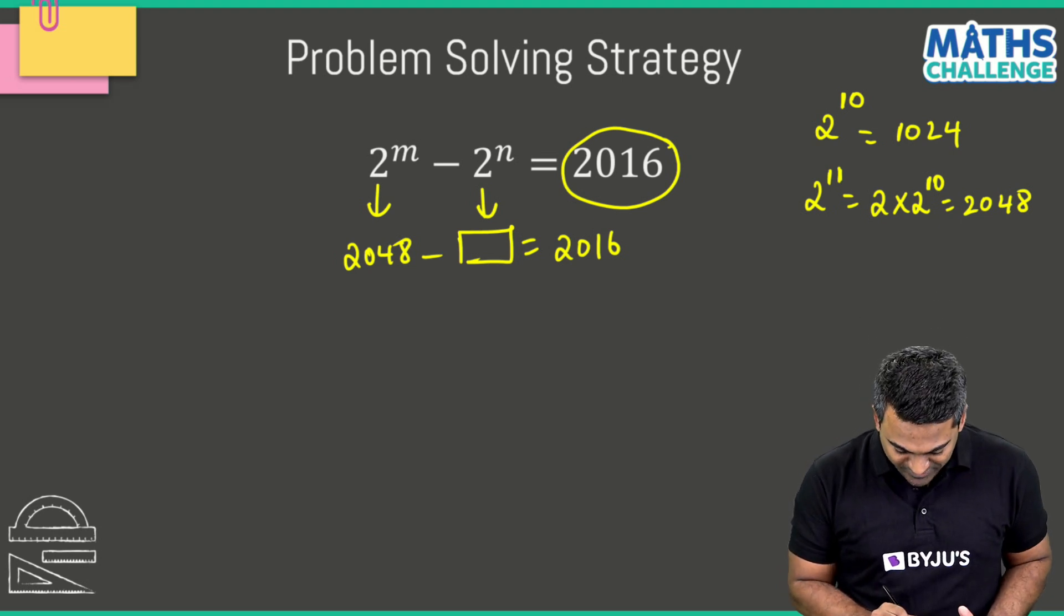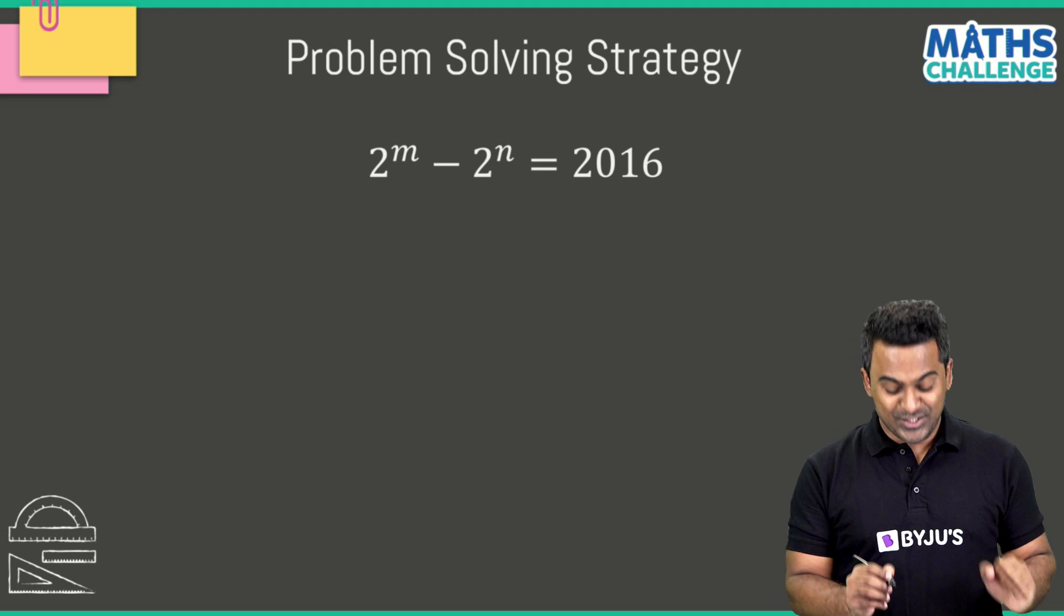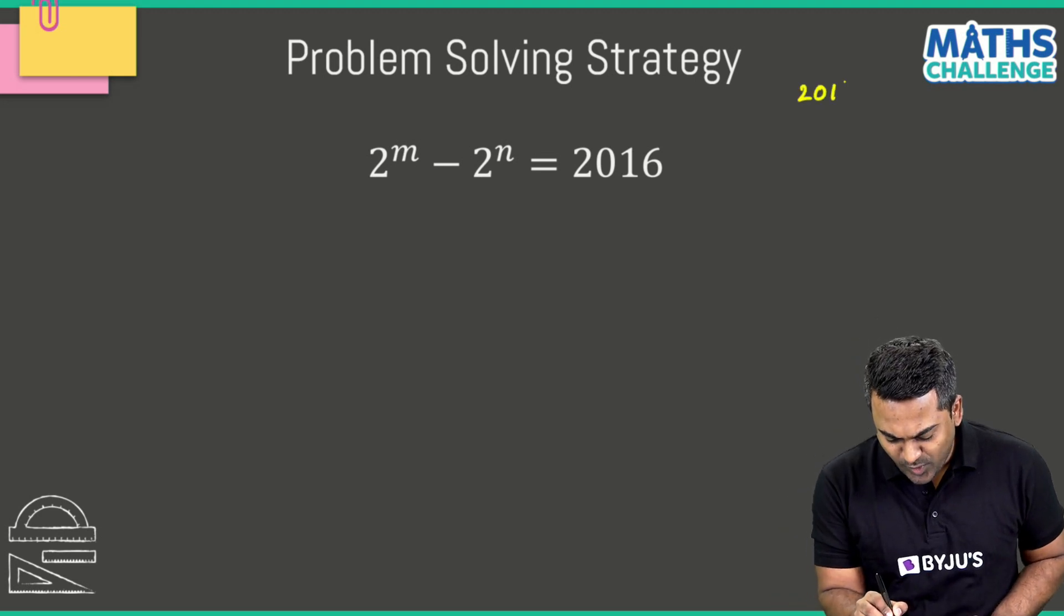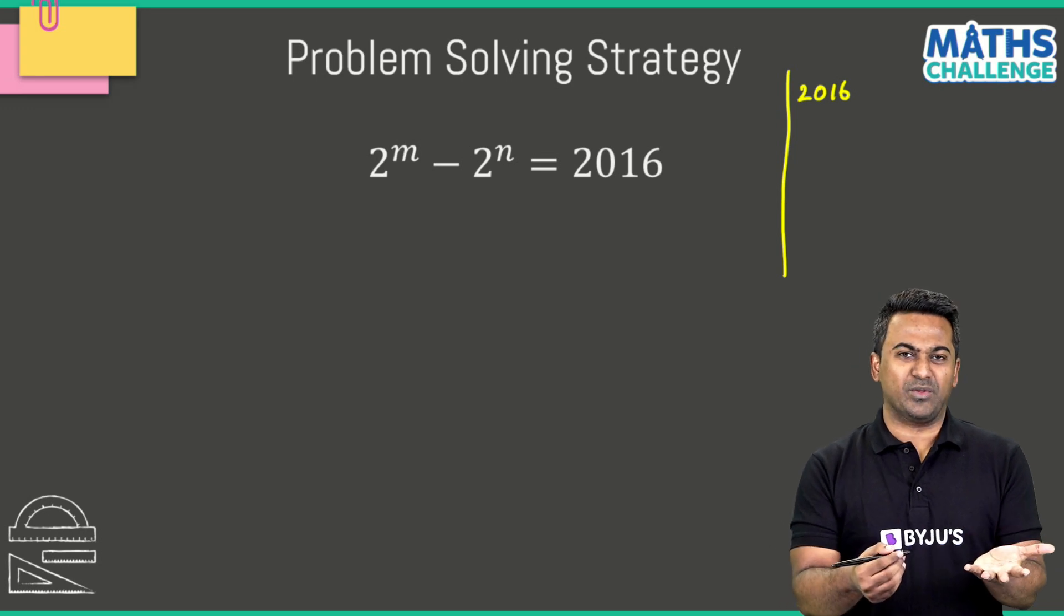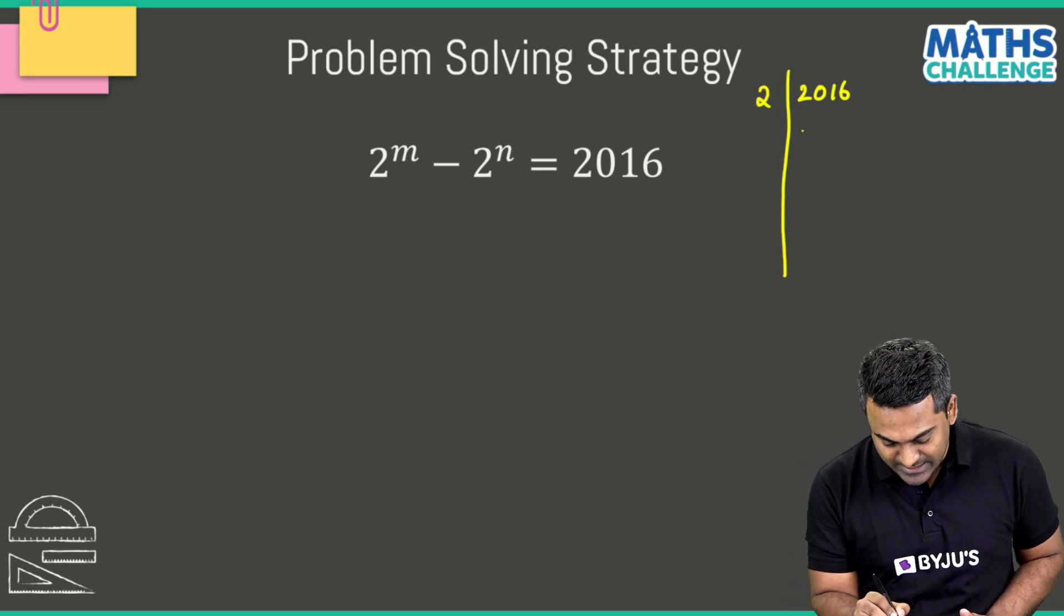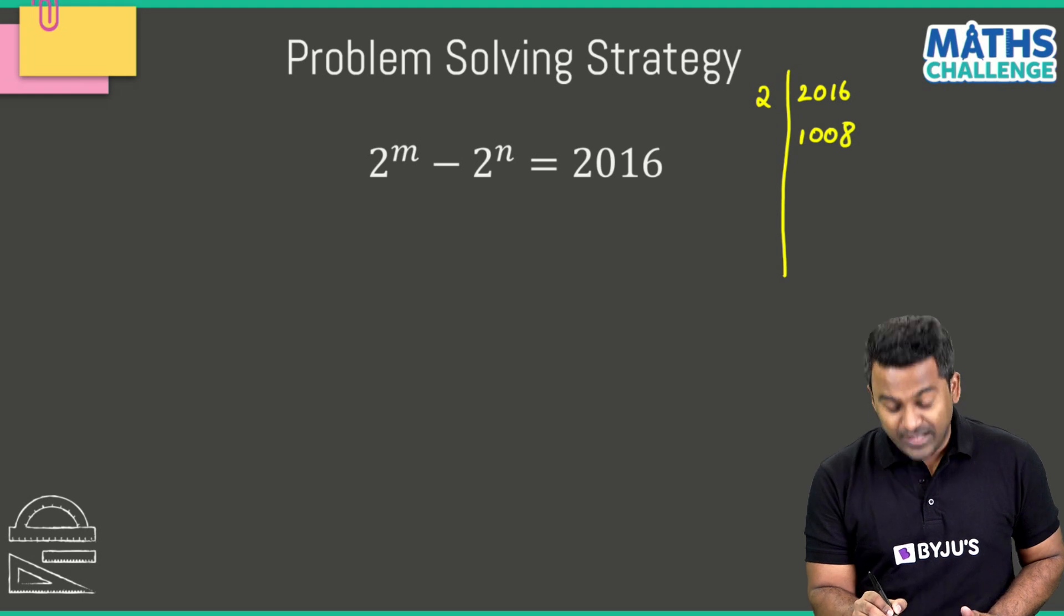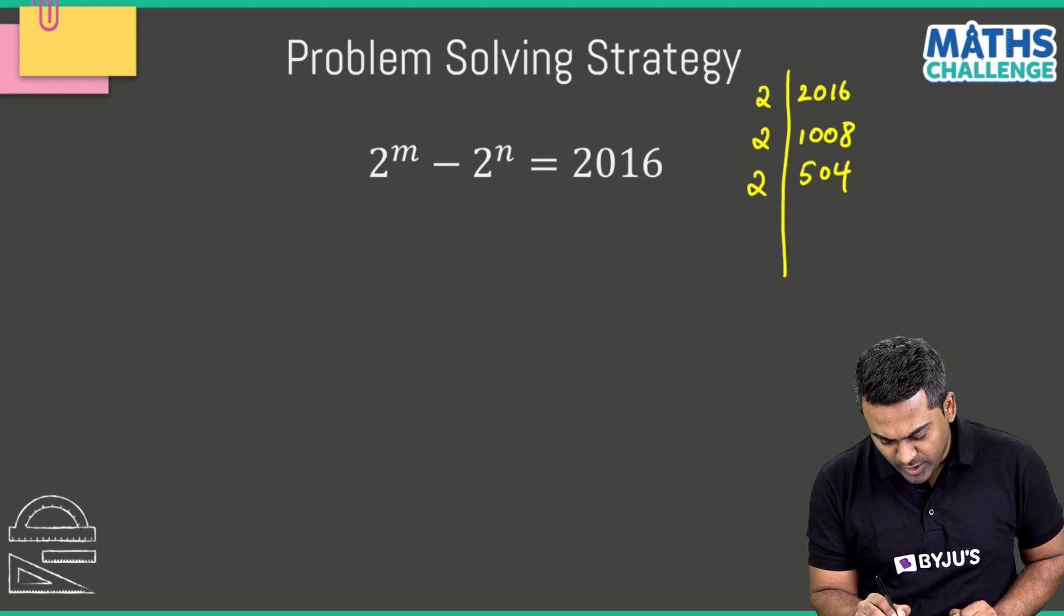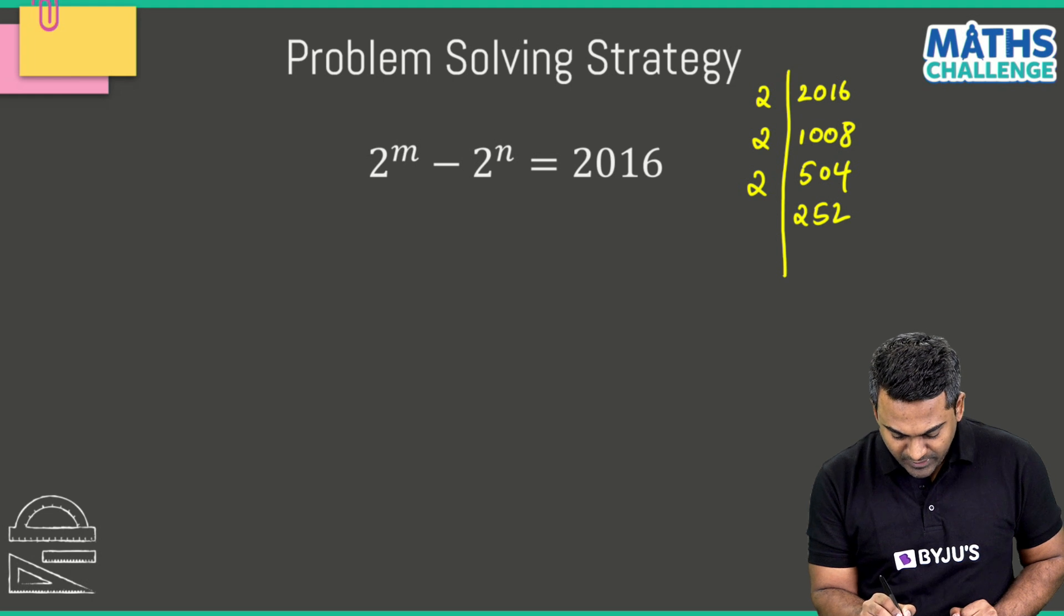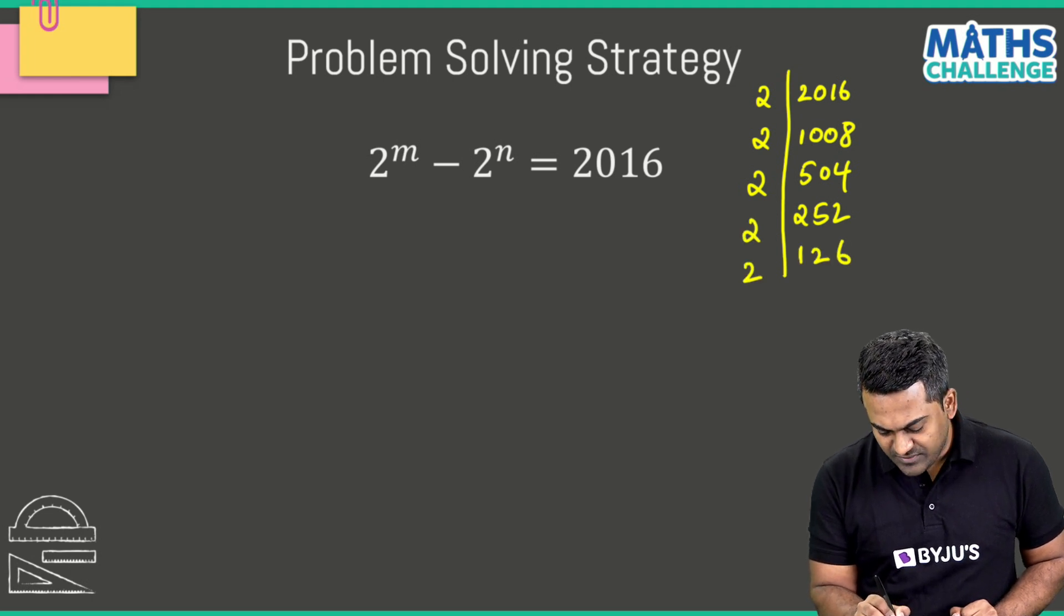First step: prime factorization of 2016. We're all familiar with how to do this. 2016 divided by 2 is 1008, which is divisible by 2 giving 504, then 252, then 2 times 126.